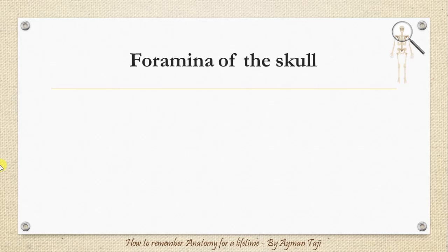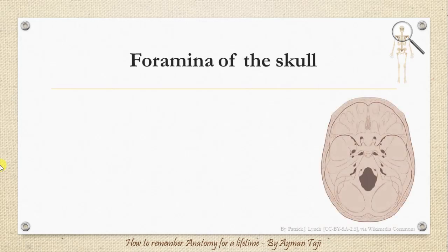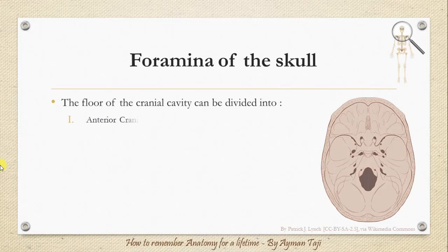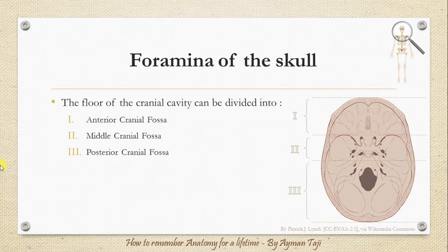Let's move on to the foramina of the skull. The floor of the cranial cavity can be divided into an anterior cranial fossa, a middle cranial fossa, and a posterior cranial fossa, all of which contain foramina and fissures through which blood vessels and cranial nerves are transmitted.